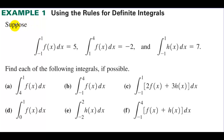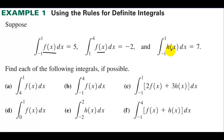Using the rules for definite integrals. Suppose we have: the integral from negative 1 to 1 of f(x) is 5, the integral from 1 to 4 of f(x) is negative 2, and the integral from negative 1 to 1 of h(x) is 7. Find each of the following integrals if possible. Can we find the integral from 4 to 1 of f(x)?